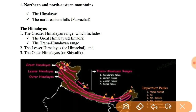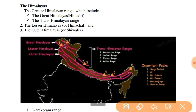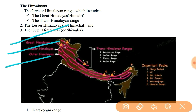Northern and Northeastern mountains are the Himalayas and Purvachal. Now I will explain about the Himalayas first. The Himalayas are classified into three ranges: Greater Himalayas or Himadri, Lesser Himalayas or Himachal, and finally Outer Himalayas or Shivaliks.